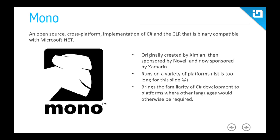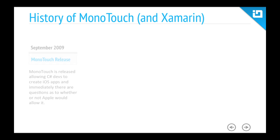What does Mono do? It brings the familiarity of C# development to platforms where other languages would otherwise be required. In this case, we're talking about iOS, which means Objective-C — an unfamiliar language for a lot of people. C# being the lingua franca of .NET, it's great to be able to use it on other platforms such as iOS.